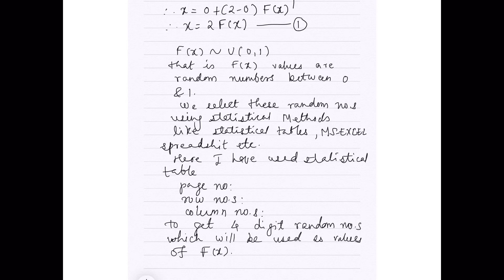Now, we know the property of F(x) that F(x) follows random uniform distribution between 0 and 1. That is, F(x) values are random numbers between 0 and 1. We select these random numbers using statistical methods. You can select using statistical tables or MS Excel spreadsheet. Some people prefer C programming. It is your choice. Here, I have used statistical table.